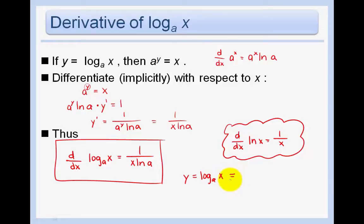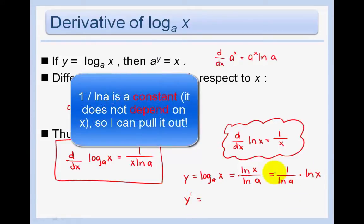Using our change of base formula, isn't that just ln x over ln a? So I'm just going to re-express that as 1 over ln a times ln x. And the reason I'm doing that is because the next step where I want to take the derivative, 1 over ln a is a constant that I can pull out.